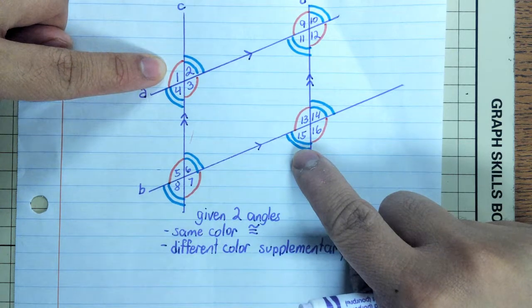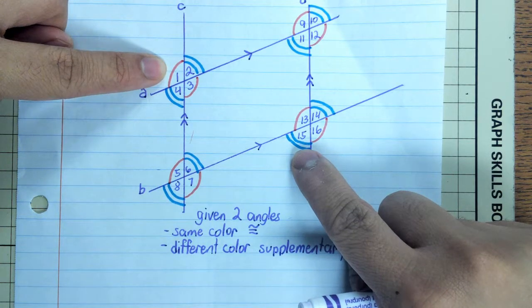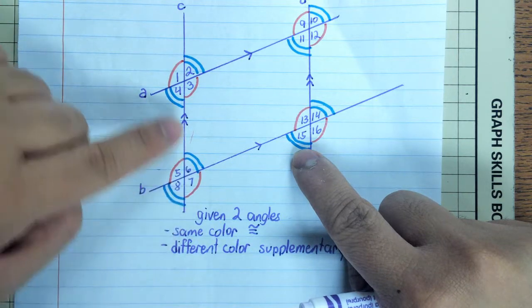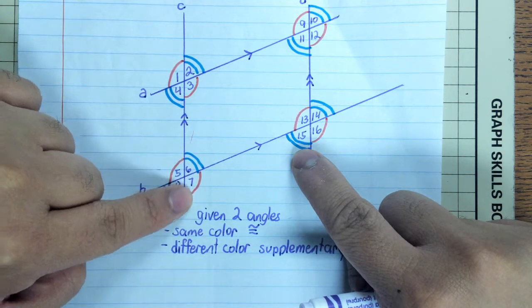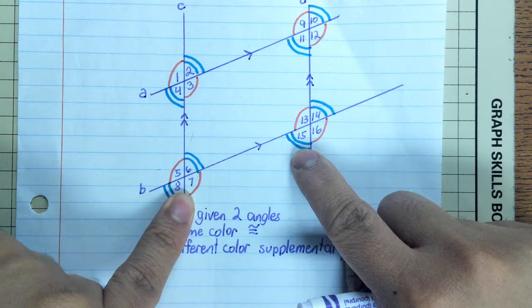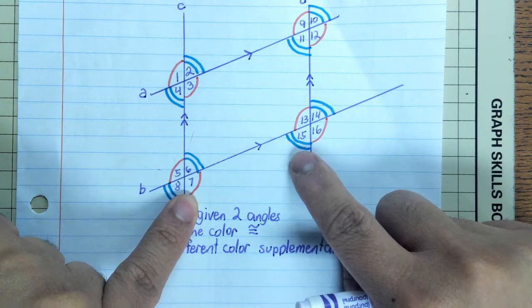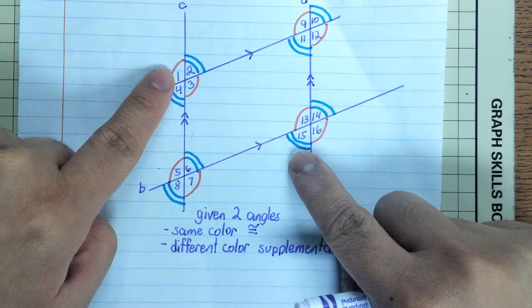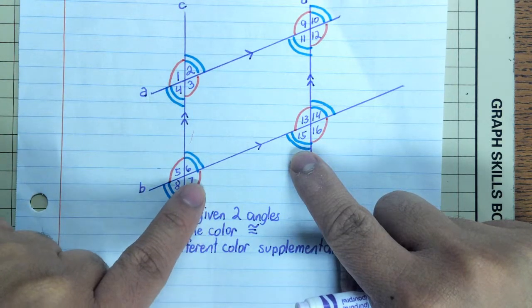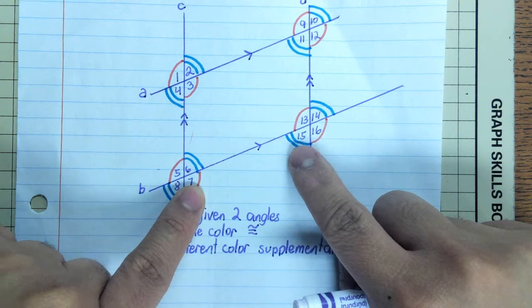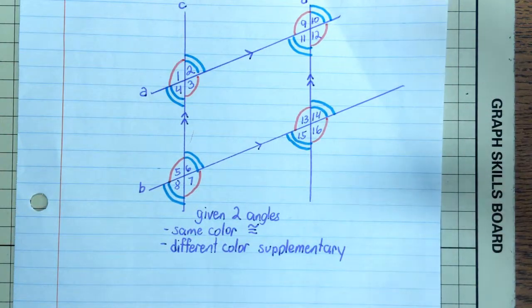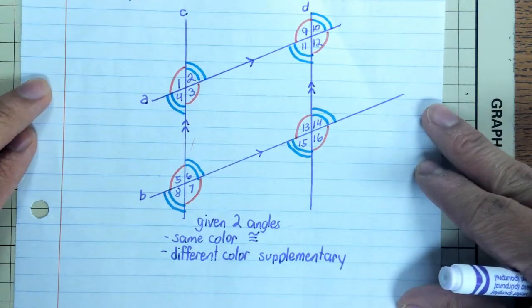Now the real reason they're supplementary is because one and seven are alternate exterior angles which makes them congruent, they're the same, and seven and fifteen are supplementary. So since seven and one are the same, I can pick up one and put it down here, that would make it supplementary with fifteen. But again, I like the colors because it gives us a shortcut of figuring out these angles.